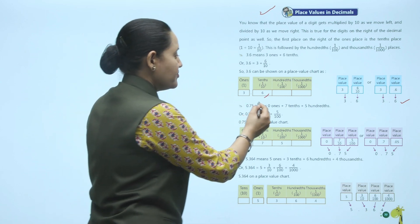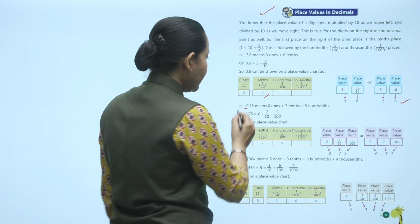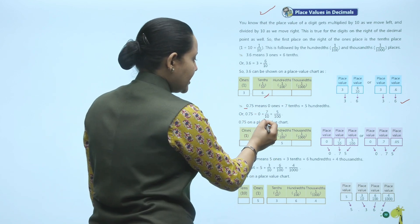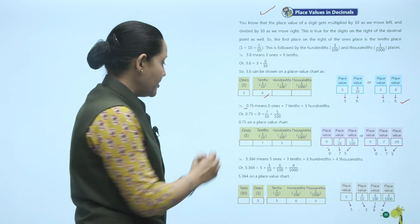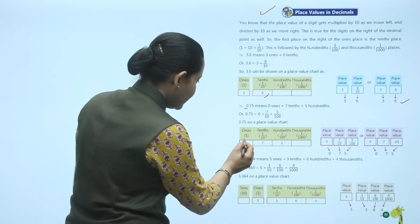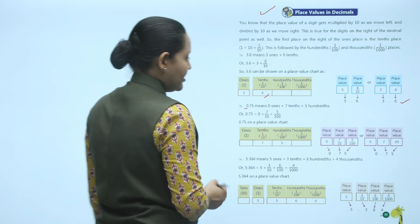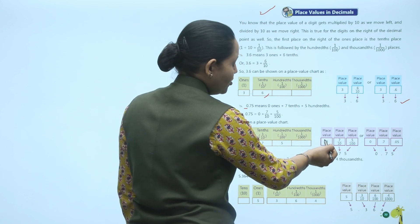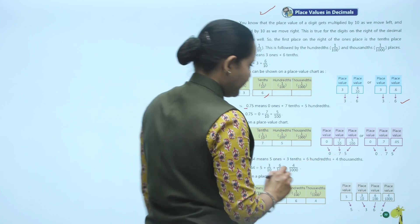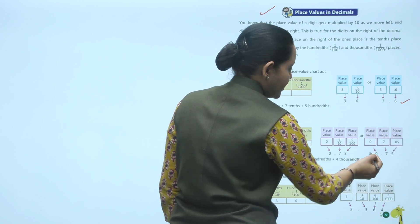Next: 0.75 means 0 ones, 7 tenths, and 5 hundredths. We can write it as 0 plus 7 upon 10 plus 5 upon 100. On the place value chart: ones place has 0, tenths has 7, hundredths has 5. So 0.75 equals 0 plus 0.7 plus 0.05.